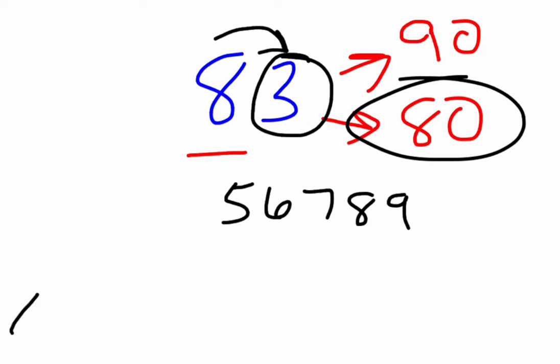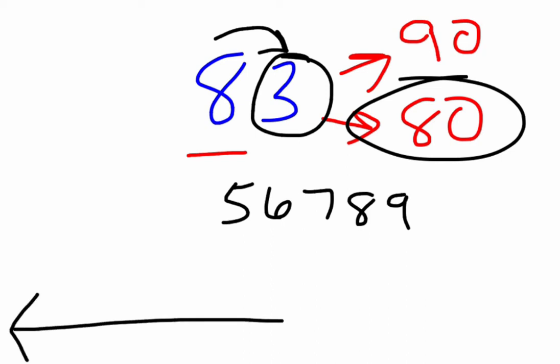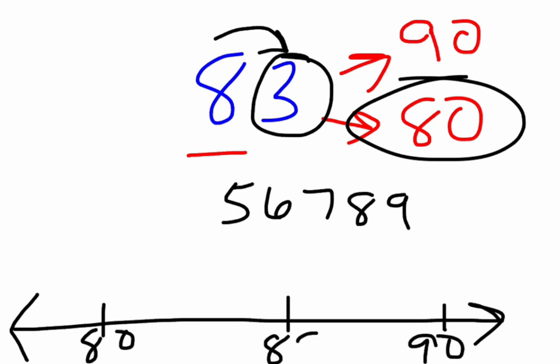If you want to check yourself, draw a little number line. Put your 80 there, your 90 there, your 85 in the middle. Then you'd plot 83 about where it would be on the number line, and you can see it would be closest to 80. So it does check — 83 would round down to 80.